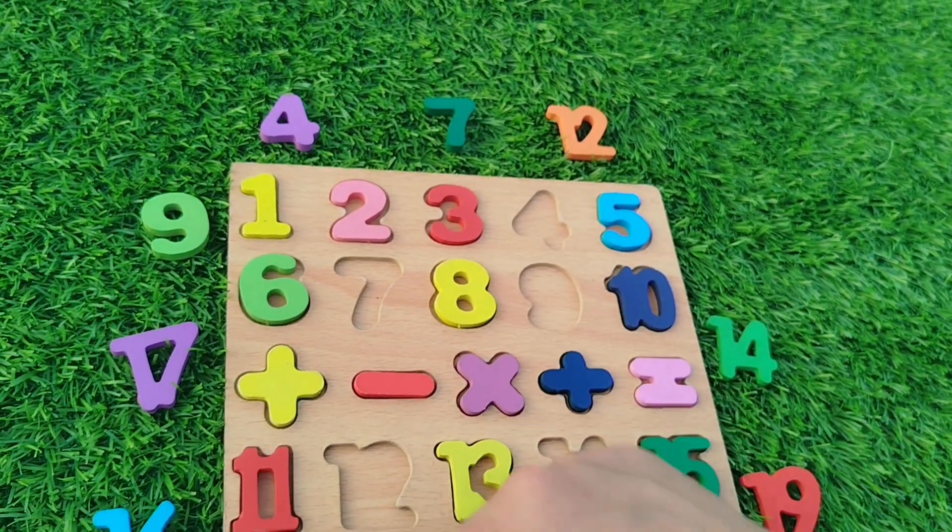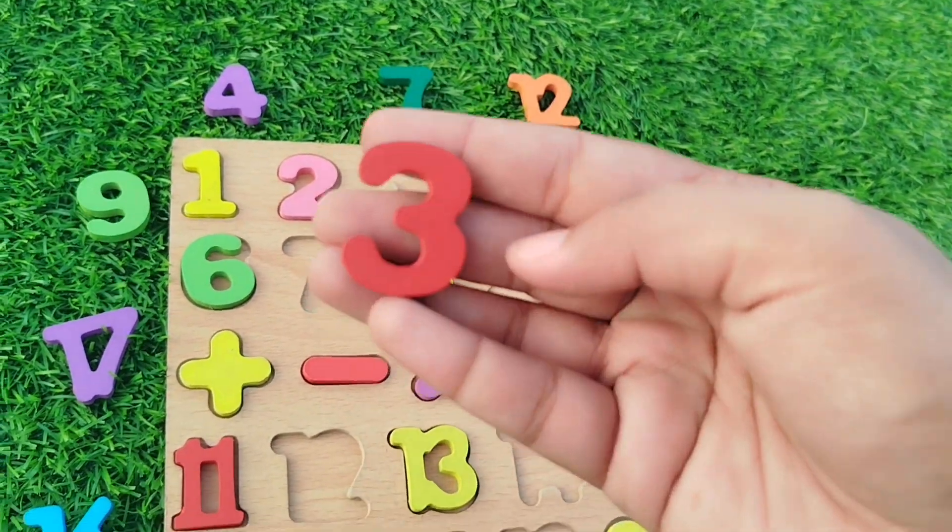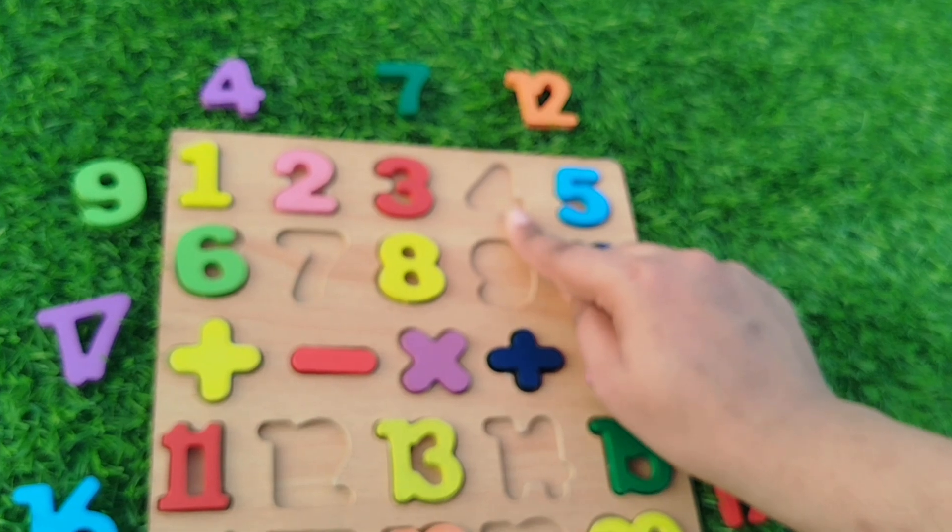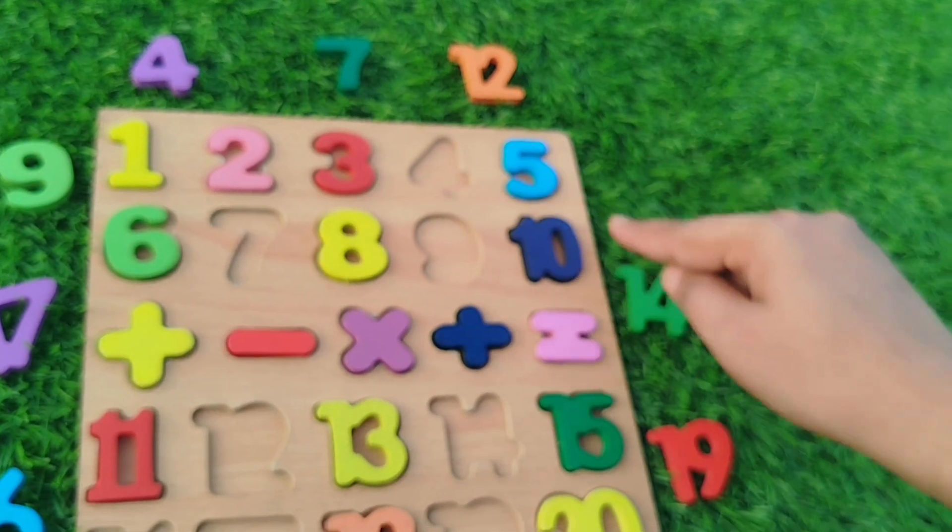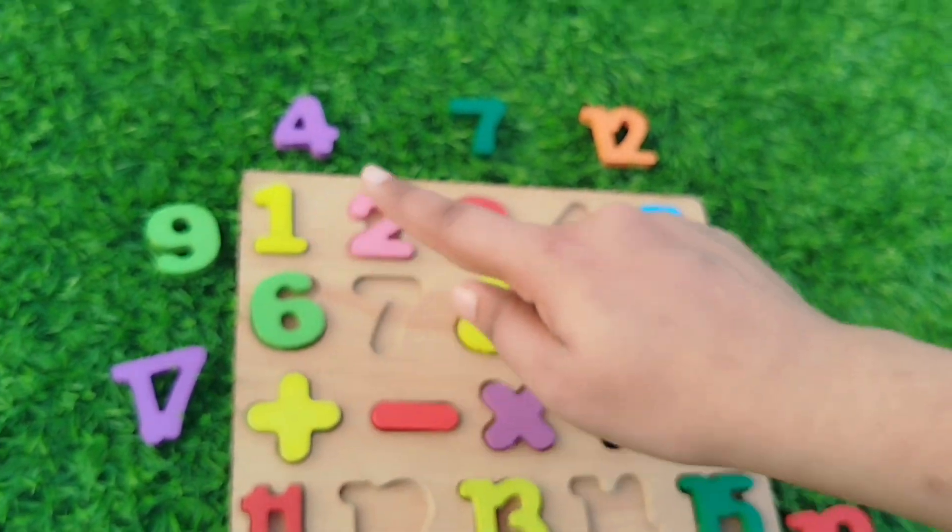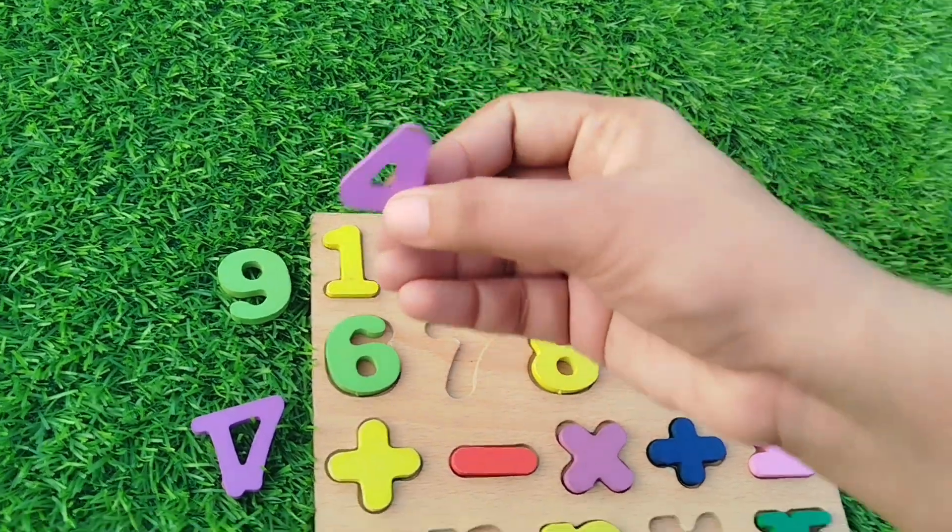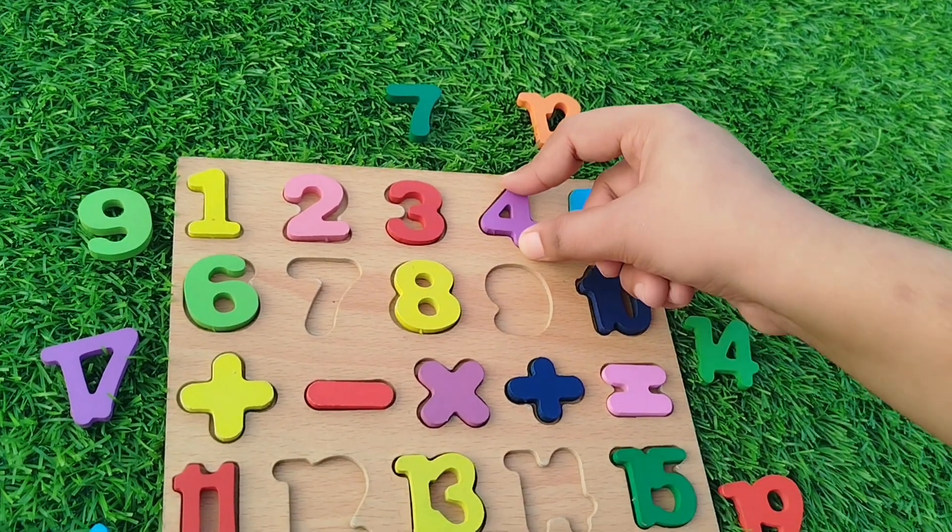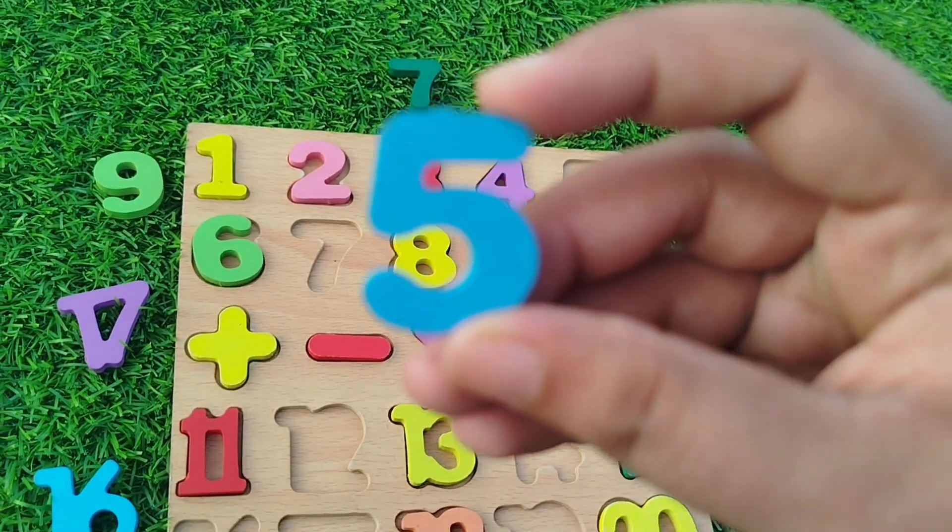The next number is 3. Number 3. Number 4. 4 is missing. Where is number 4? Yes, this is number 4. The next number is 5.